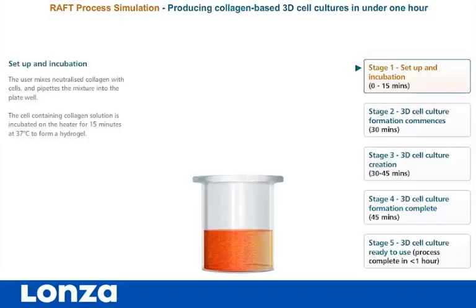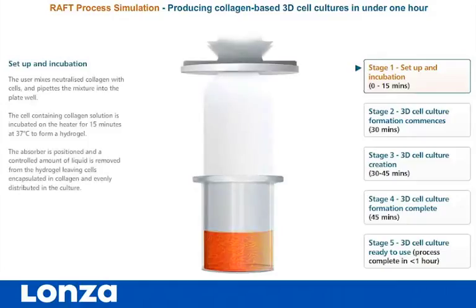The user mixes neutralized collagen with cells and pipettes the mixture into the plate well. The cell-containing collagen solution is incubated on the heater for 15 minutes at 37 degrees Celsius to form a hydrogel. The absorber is then positioned, and a controlled amount of liquid is removed from the hydrogel, leaving cells encapsulated in collagen and evenly distributed in the culture.